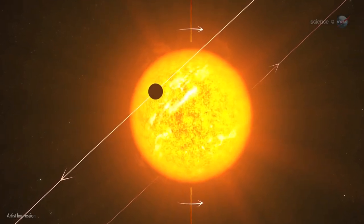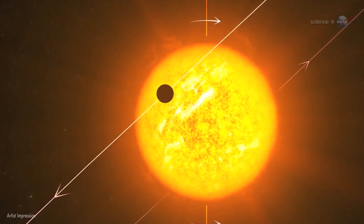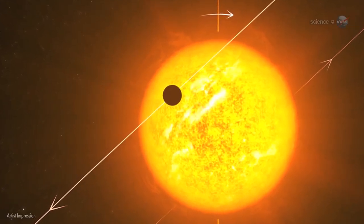Only a handful of known super-Earths, however, cross the face of their stars as viewed from our vantage point in the cosmos. So 55 Cancri e is better understood than most.